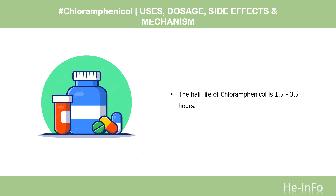Half-Life: In adults with normal hepatic and renal function, the half-life is 1.5 to 3.5 hours. In patients with impaired renal function, the half-life is 3 to 4 hours.